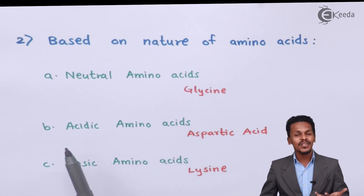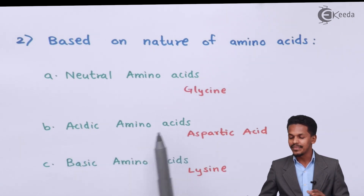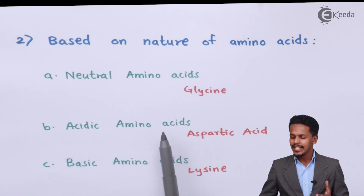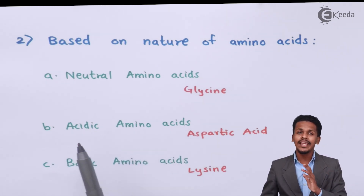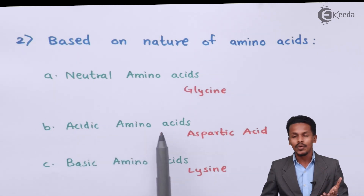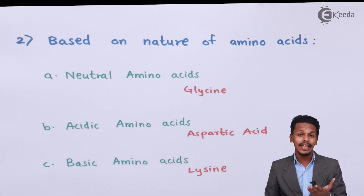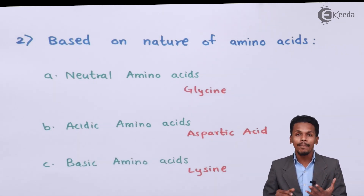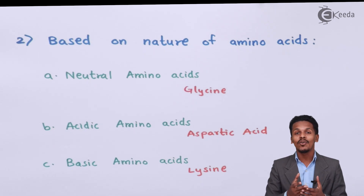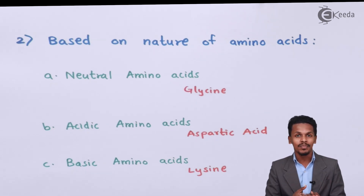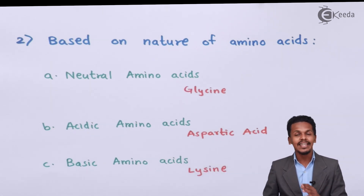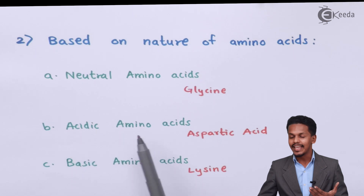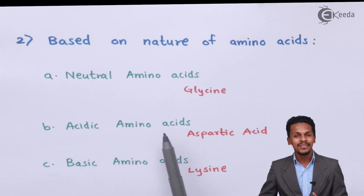Talking about the next one — acidic amino acids. In acidic amino acids, there are more carboxylic groups compared to amino groups. For example, aspartic acid is basically an acidic amino acid.